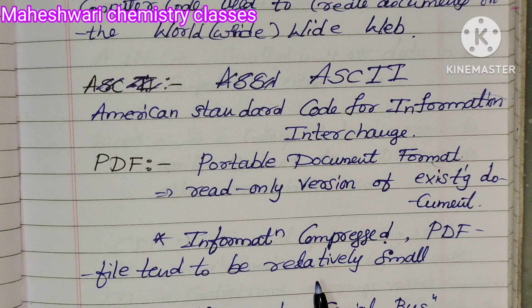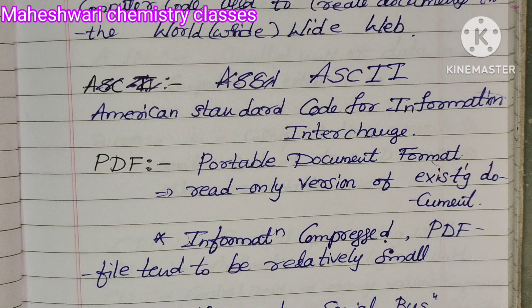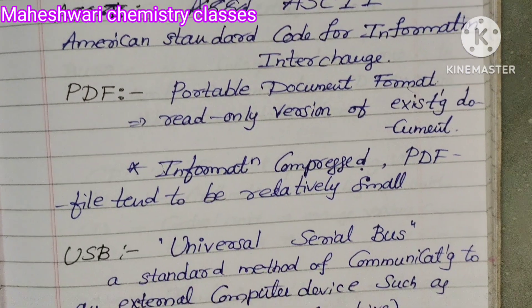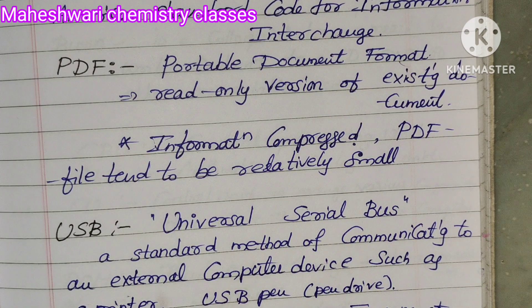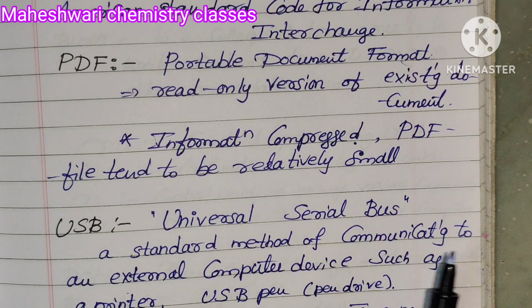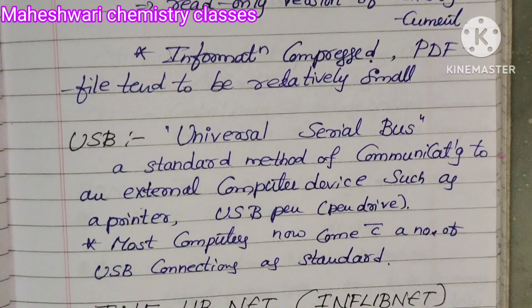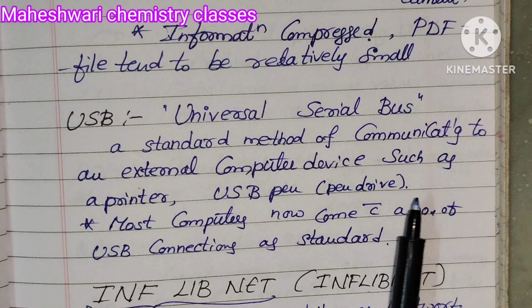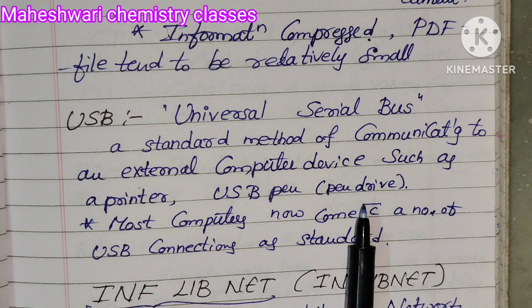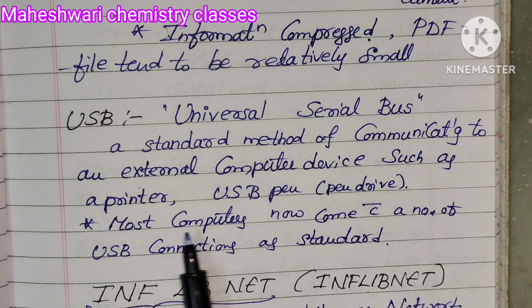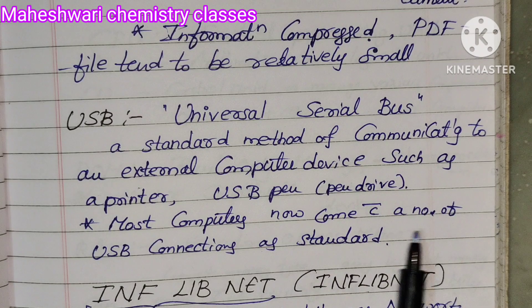USB — Universal Serial Bus — is a standard method of communicating to an external computer device such as a printer. A USB pen is nothing but a pen drive. Most computers now come with a number of USB connections as standard.